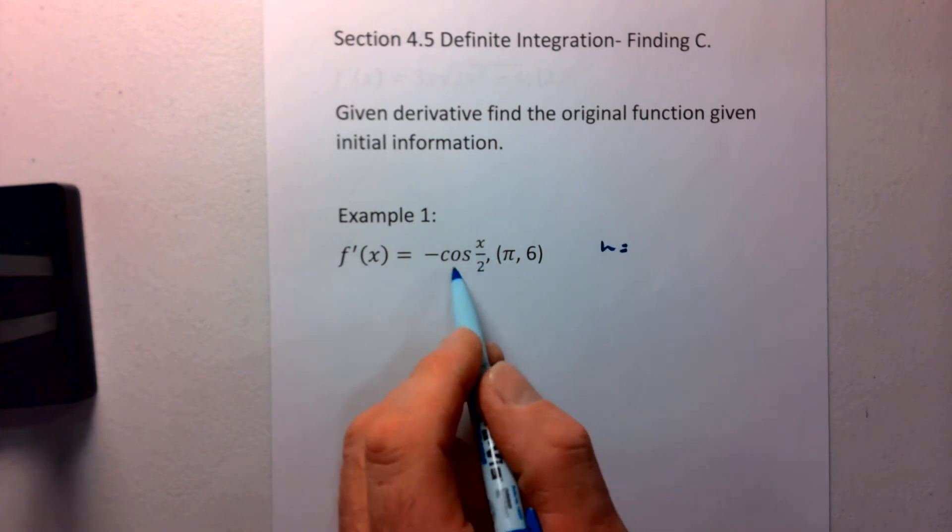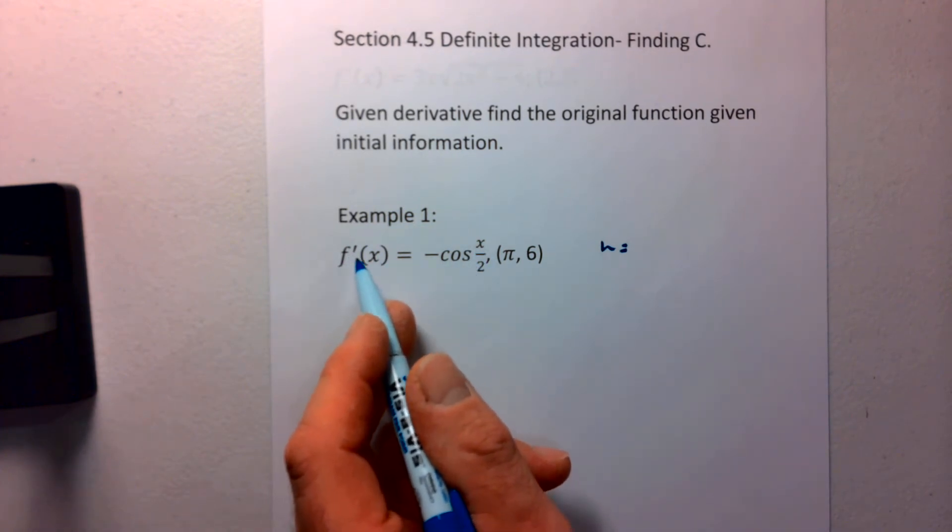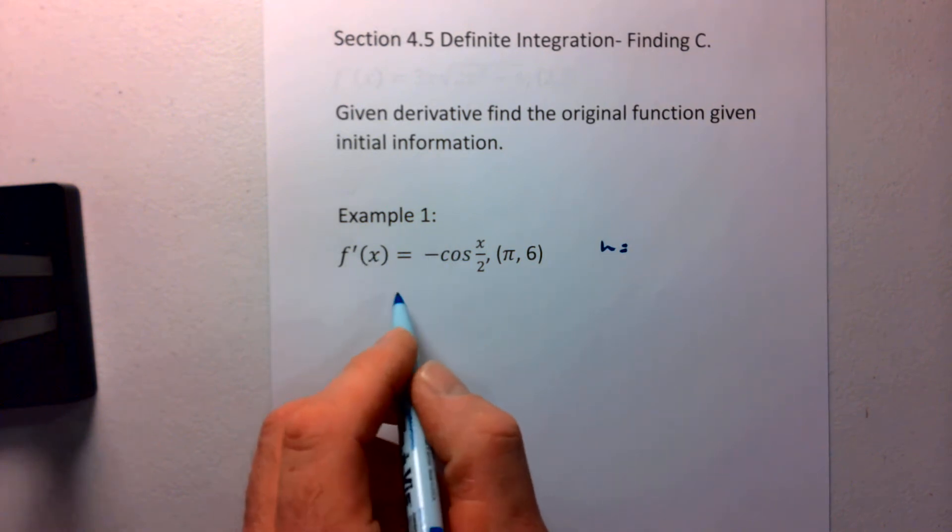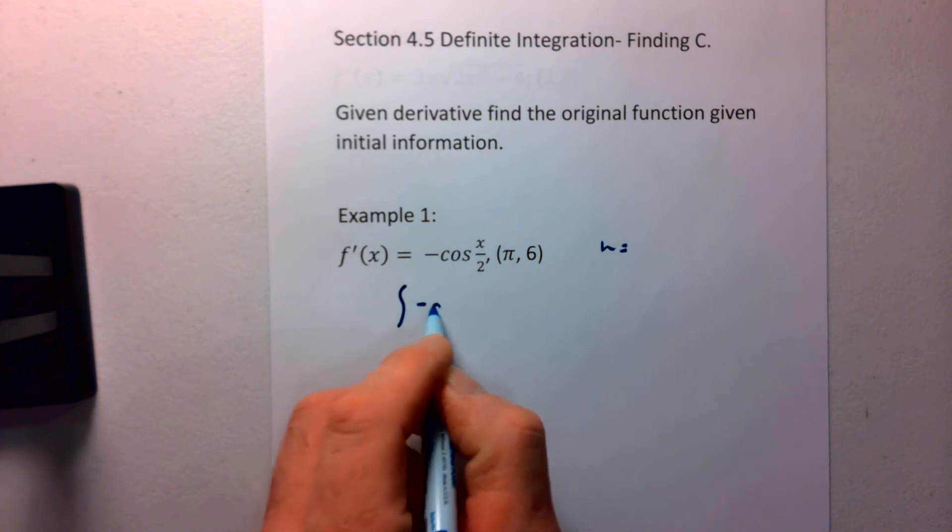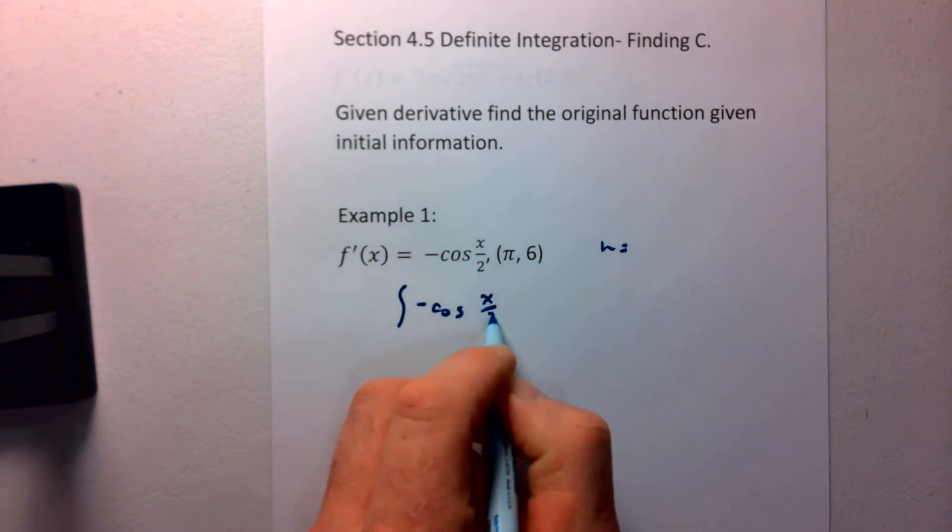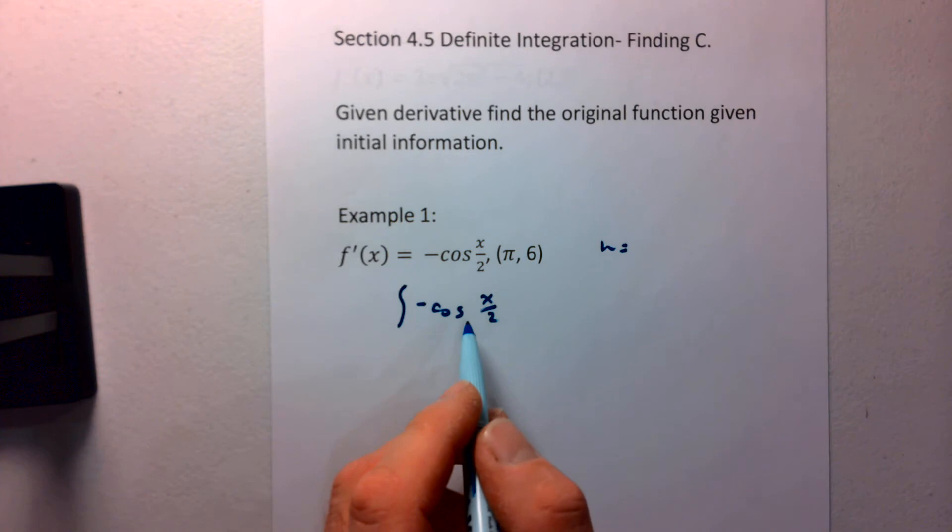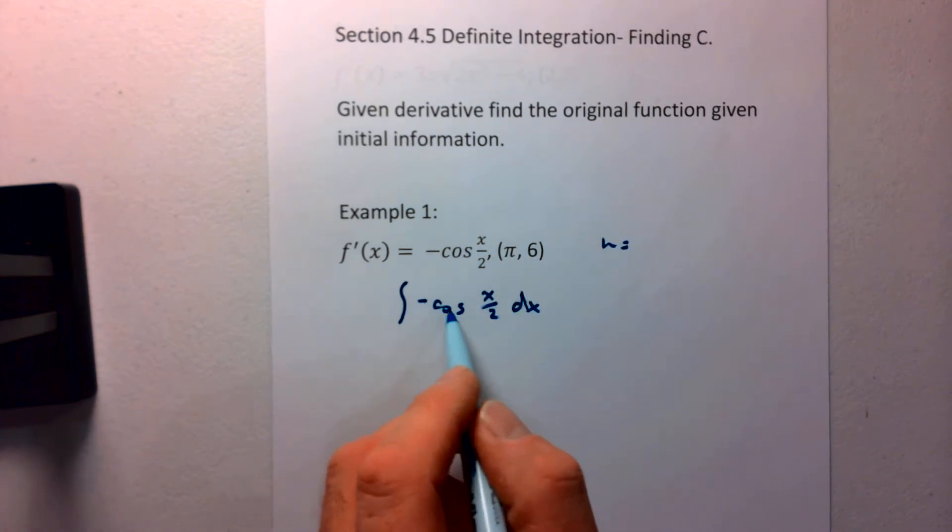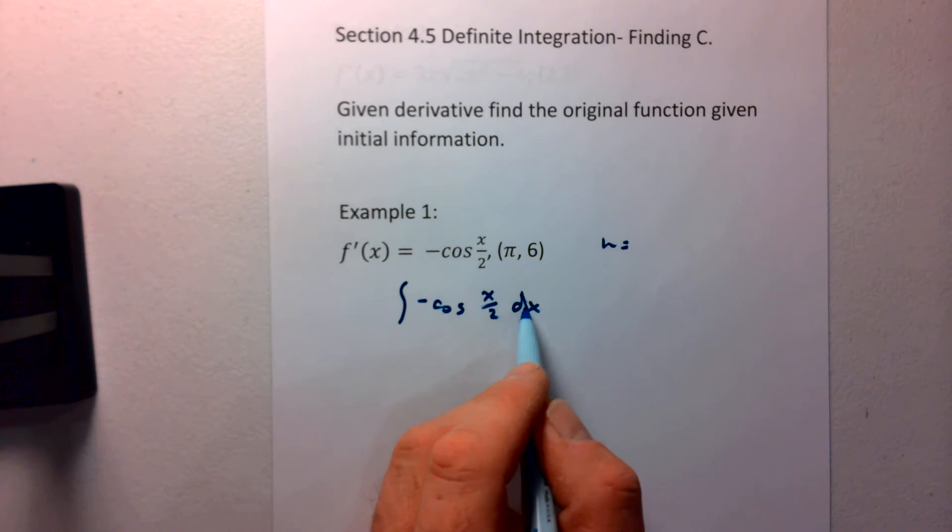We're going to let our u, since we have a trig function here. Well, to start with, if we have the first derivative and we can find the original function, then we're going to be able to integrate that function to find our c value. So to start with, we're integrating the negative cosine of x over 2 dx.